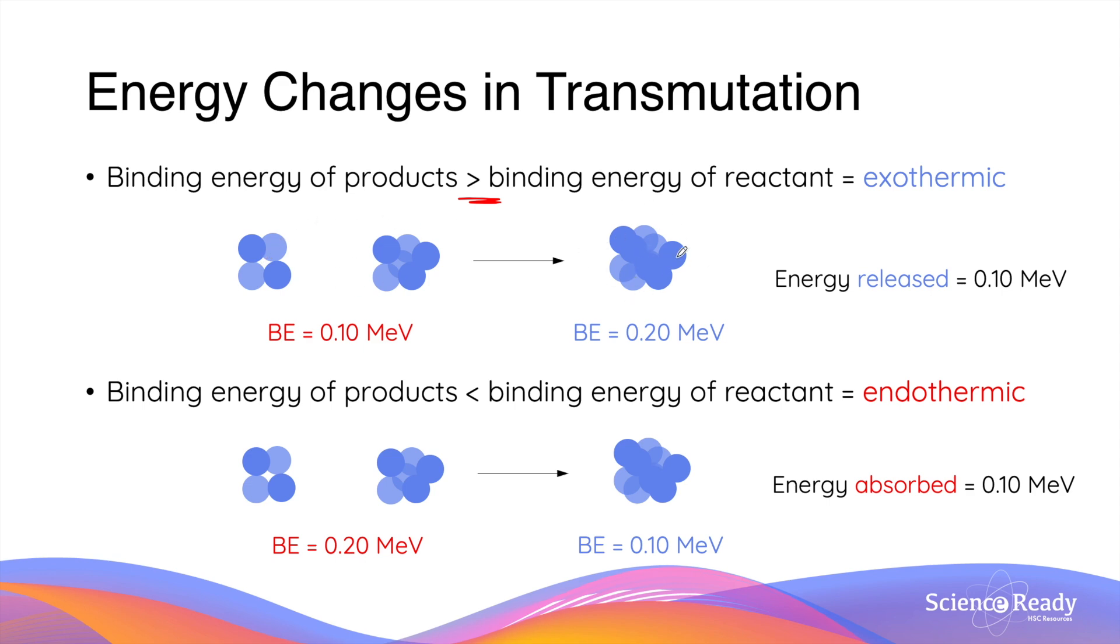When the reactants are broken, they can then form the product, and this releases the binding energy of the product, which is 0.2 MeV. As you can see, we have more energy being released than energy going into the reaction. This results in a net energy being released of 0.1 MeV, hence this reaction is exothermic.